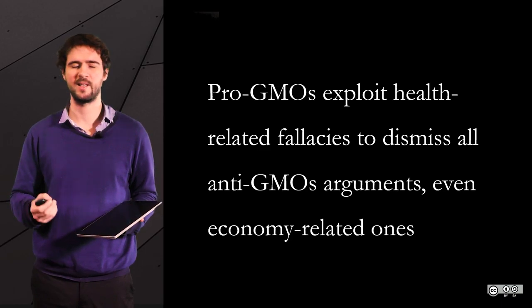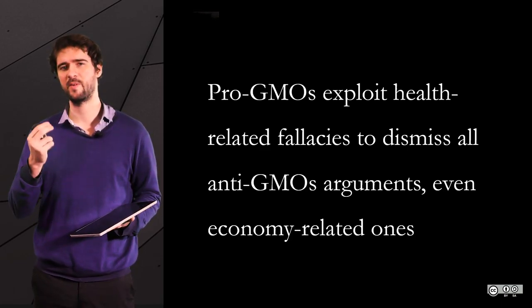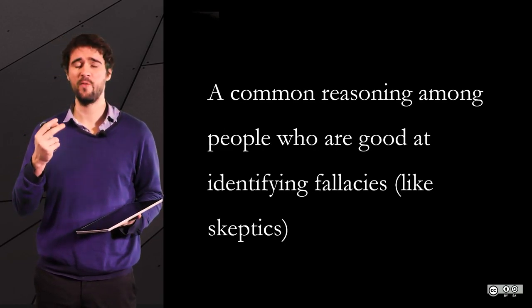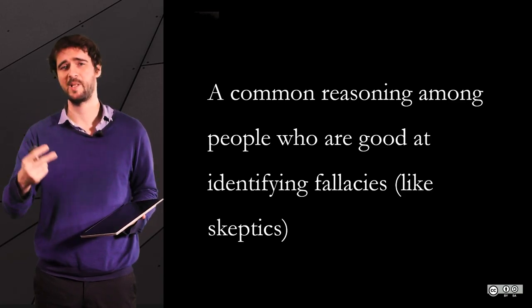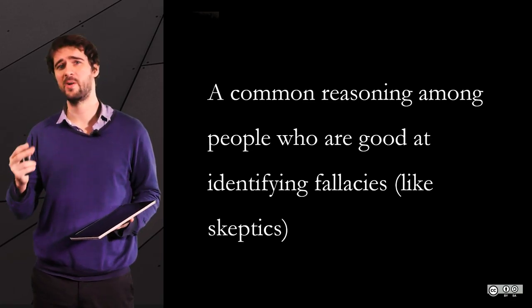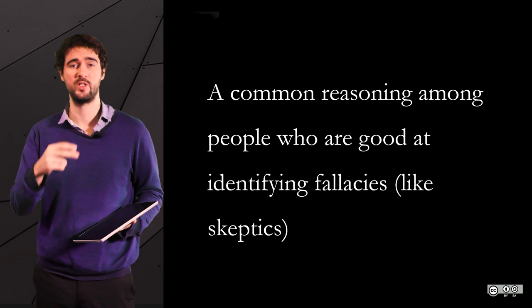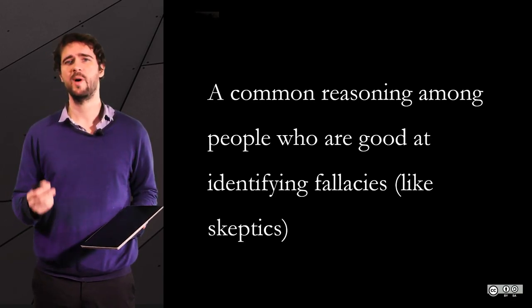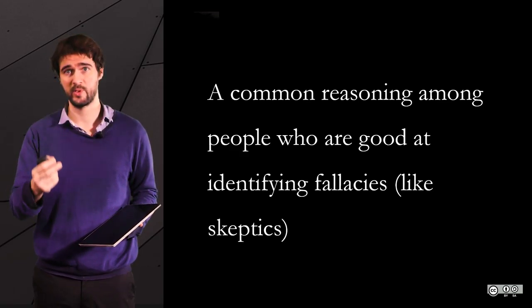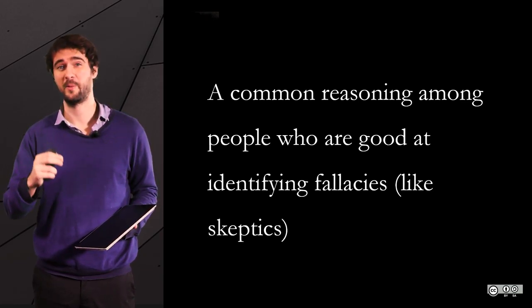Generally, people who are good at spotting fallacies often commit this very fallacy. People who are skilled at detecting fallacies are often pro-GMO or pro-nuclear, because they are able to detect fallacies in the discourses of anti-GMO or anti-nuclear activists. But detecting a fallacy is not enough. When you want to completely refute someone's argumentation, you have to refute all of their arguments — not just the invalid ones.